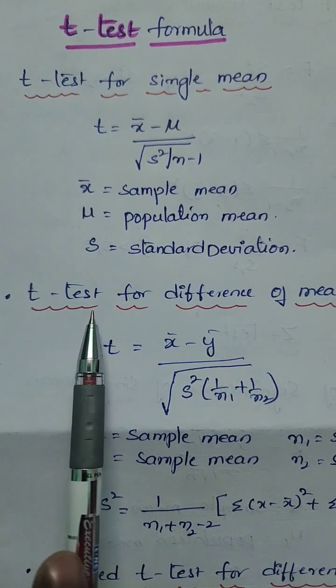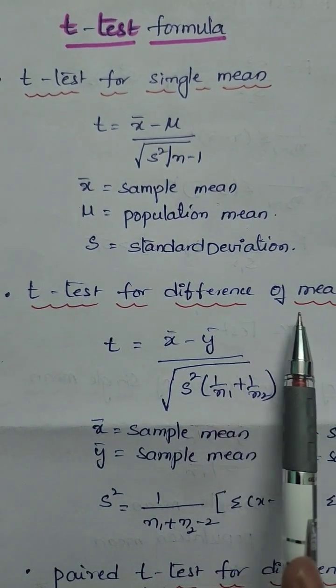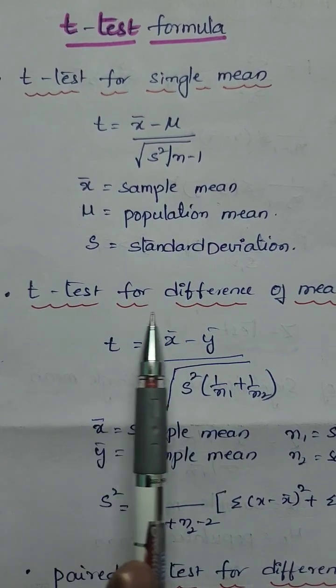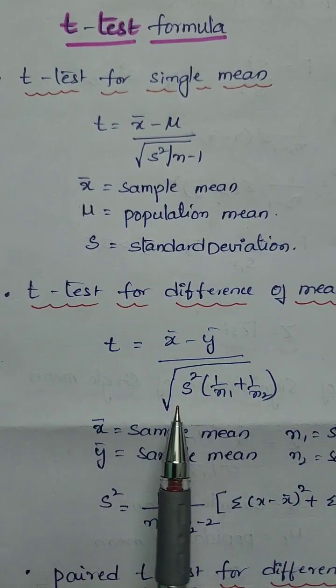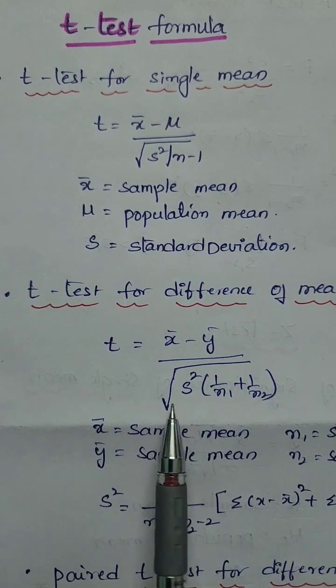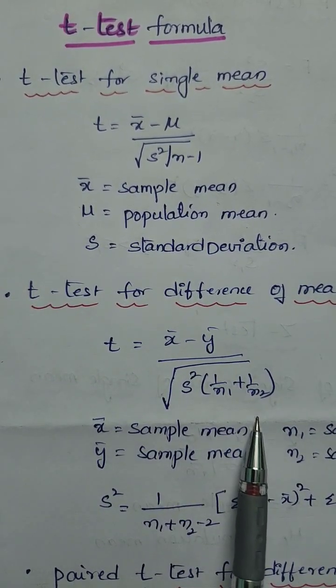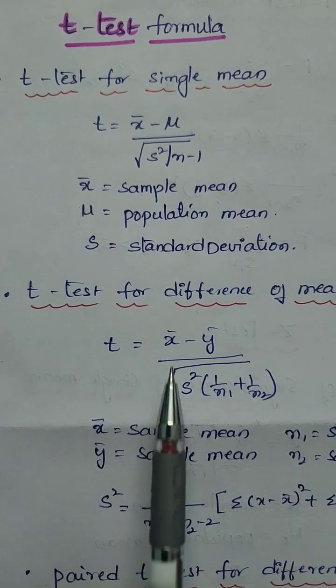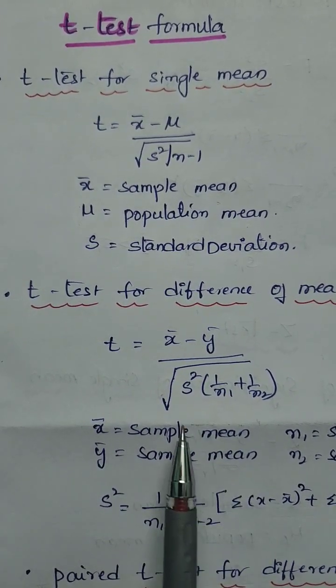And t-test for difference of means. If we have two samples, then t-test for difference of means, t equals x bar minus y bar by square root of s square into 1 by n1 plus 1 by n2. Here x bar is sample mean and y bar is sample mean. We have two samples.